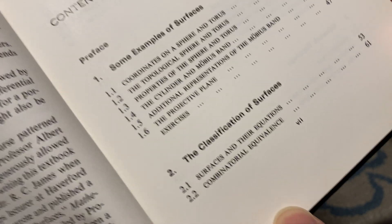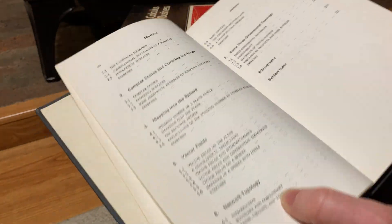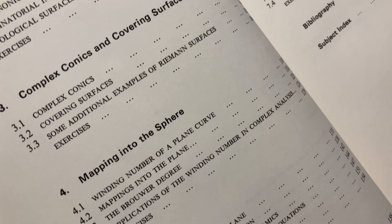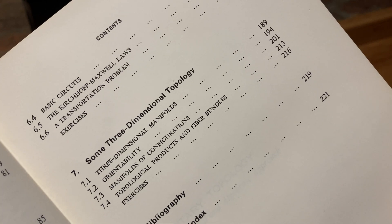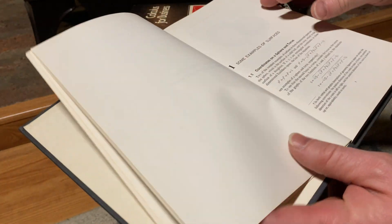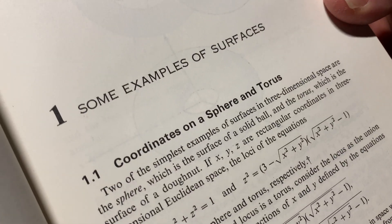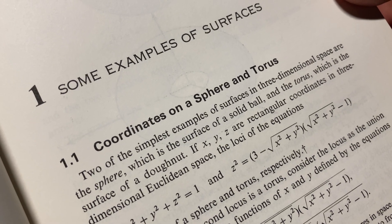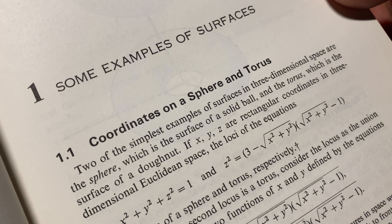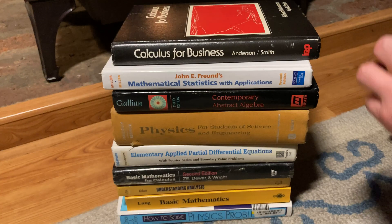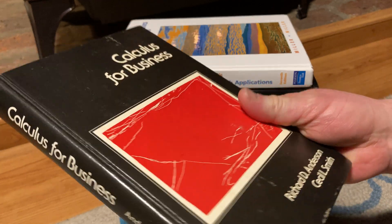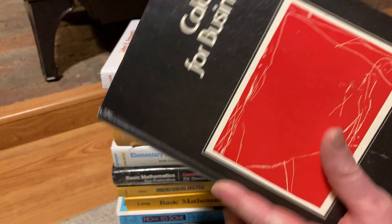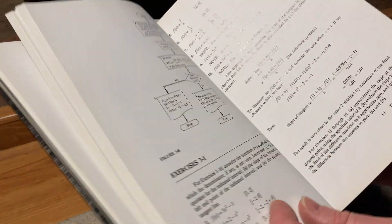The classification of surfaces, complex conics and covering surfaces, mapping into the sphere, vector fields, network topology, some three-dimensional topology — so, math you've probably never seen. Two of the simplest examples of surfaces in three-dimensional space are the sphere, which is the surface of a solid ball, and the torus, which is the surface of a donut. Cool, right? Interesting book — I've read some portions of it.